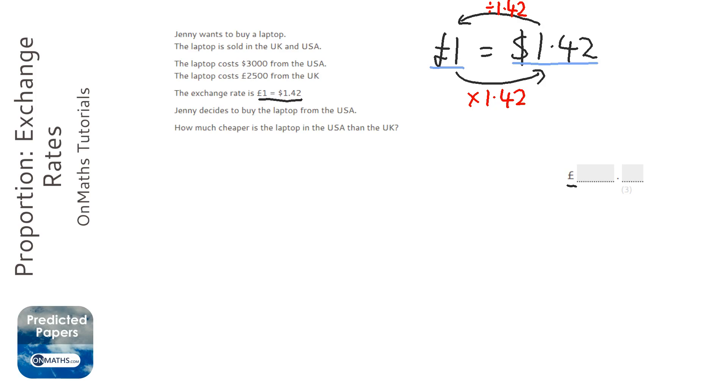So we've got $3,000 and we want to convert it into pounds. So we're going to divide it by 1.42. And I'm just going to type that into my calculator. So 3,000 divided by 1.42. And it's to the nearest pound, 2,112.68. Obviously, to two decimal places, because money is always to two decimal places.